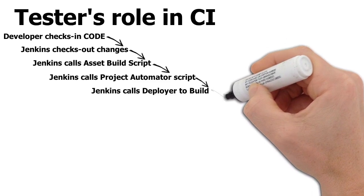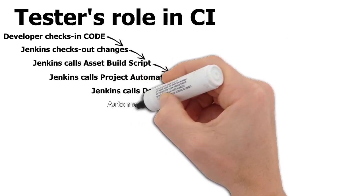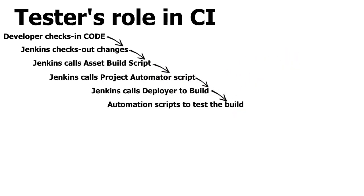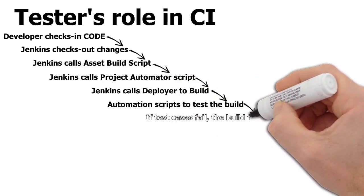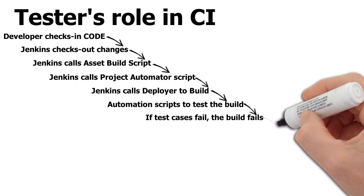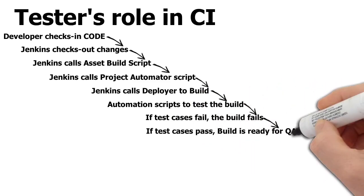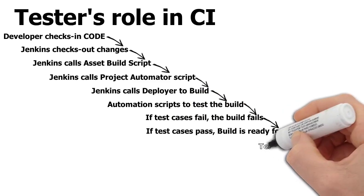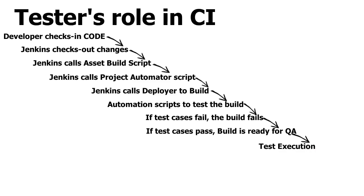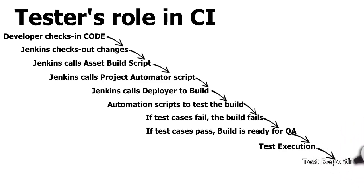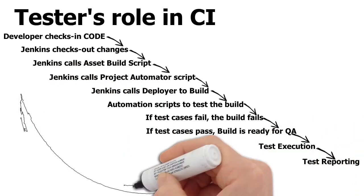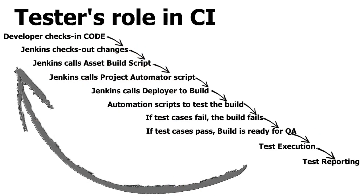A developer develops and checks in the code. As soon as the code is checked in, Jenkins checks out the changes. Jenkins then calls a build script, which in turn calls a project automator script, and Jenkins calls a deployer to deploy the build. The automation script is then executed to check whether the build is working fine and all test cases pass. If test cases are failing, the build fails. If they pass, the build is ready for QA to test. QA then performs test execution, checking functional test cases and other functionality testing.